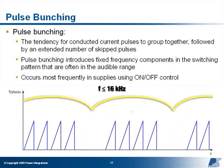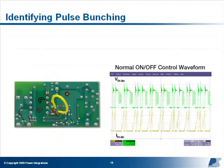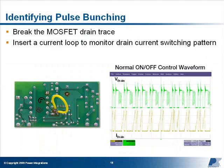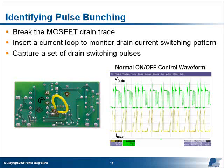This occurs most frequently in supplies using on-off control, such as TinySwitch or PeakSwitch based designs. To identify if pulse bunching is occurring in your design, break the MOSFET drain trace and insert a current loop to monitor the drain current switching pattern. With a current probe and an oscilloscope, capture a set of drain switching pulses on a wide time scale with the supply operating at normal load. If you see a number of pulses conducted in a row, followed by two or more skipped pulses, your supply is likely experiencing pulse bunching.